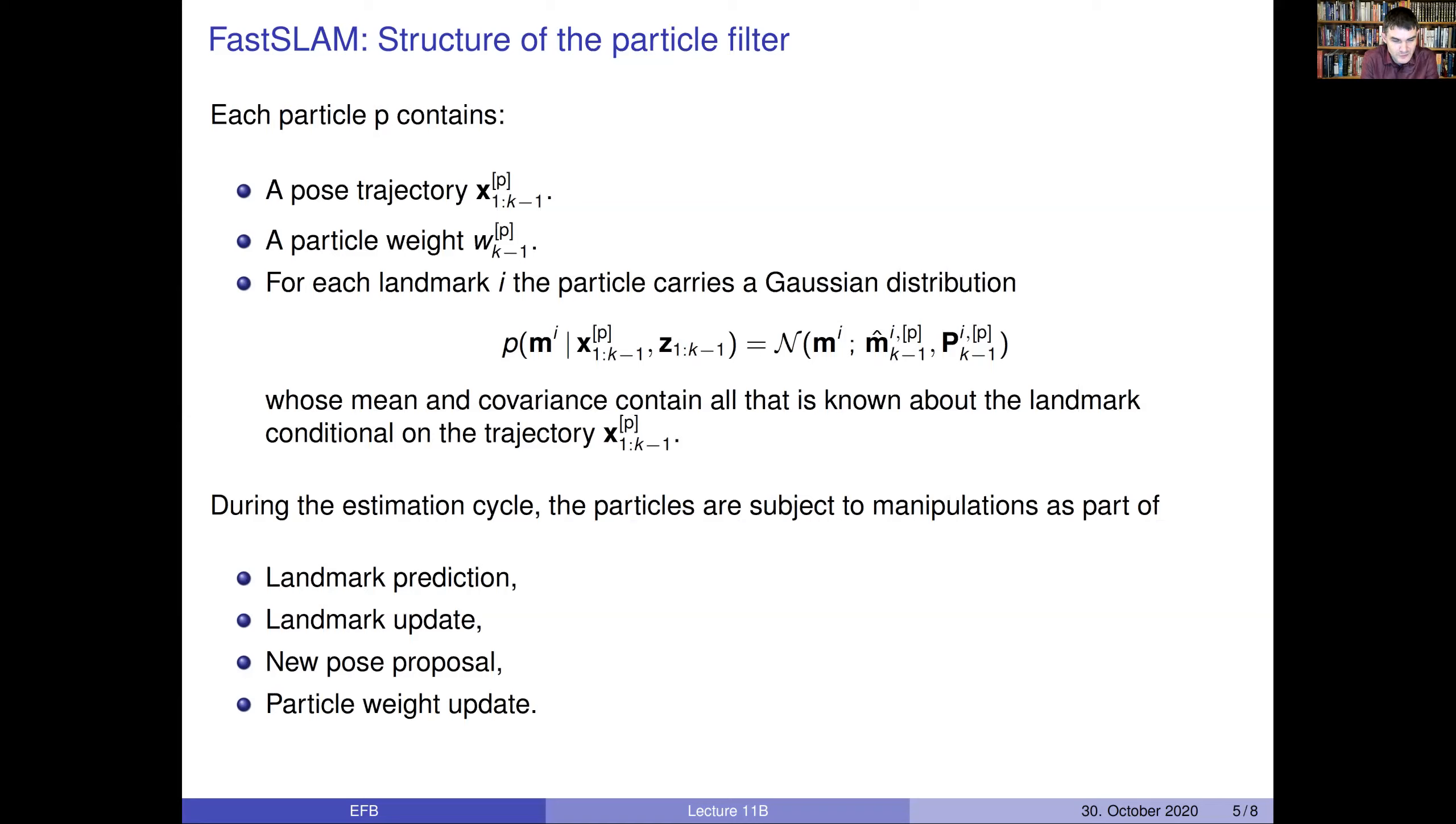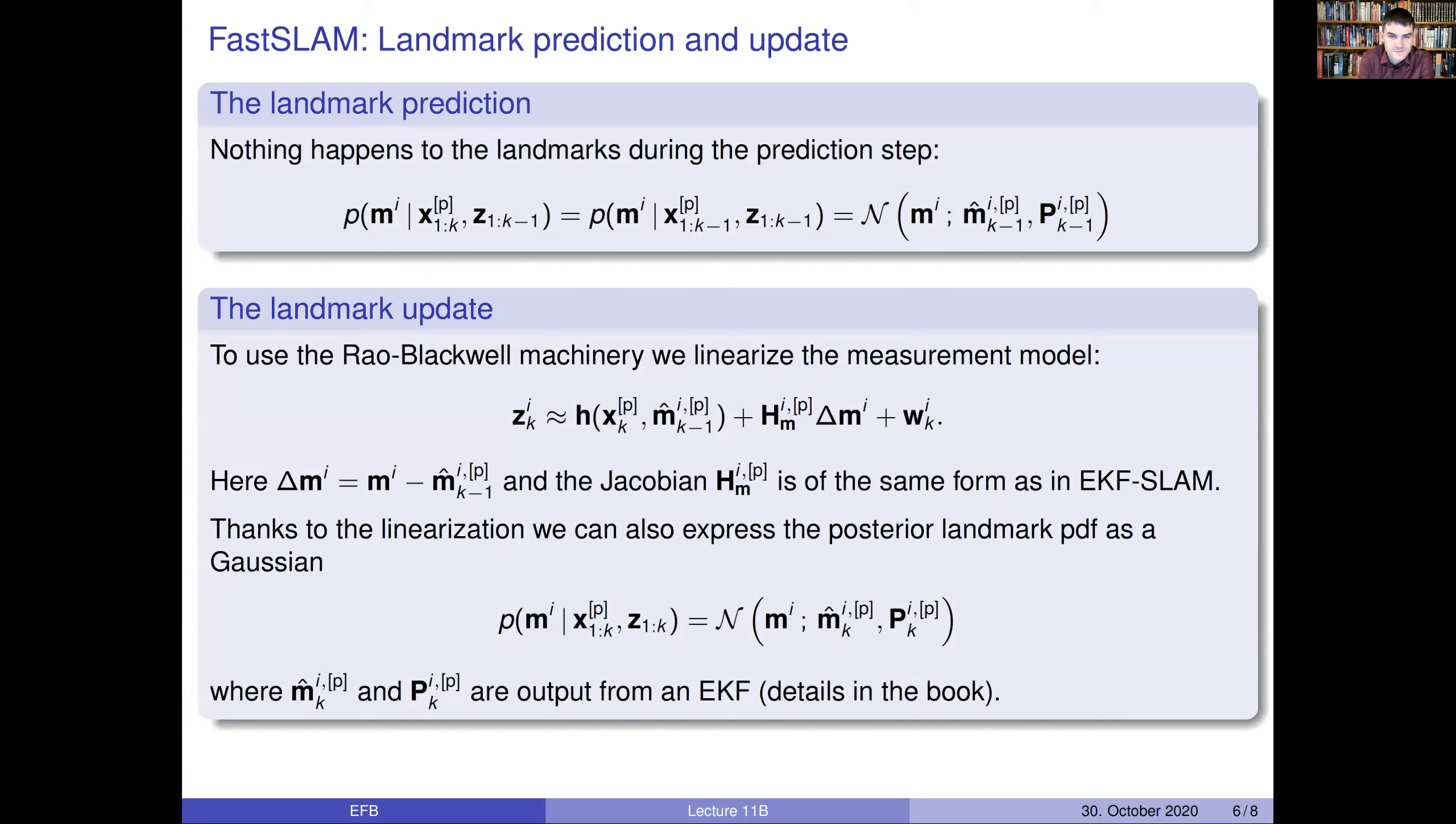And we know that when we are going to do the estimation cycle, we have to, at least now, if we think in terms of a sequential importance sampling resampling particle filter, then we are going to do prediction update of the landmarks, then we are going to do a proposal of the pose, which will be just a prediction in an SIR filter. And then we are going to update the particle weights. So let us look at how these four tasks are being done. Predicting the landmarks, that's very simple. Nothing whatsoever happens there. So we just keep the conditional posterior that we had from the previous time step.